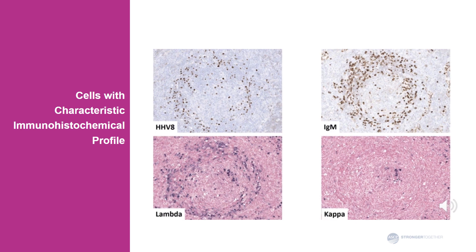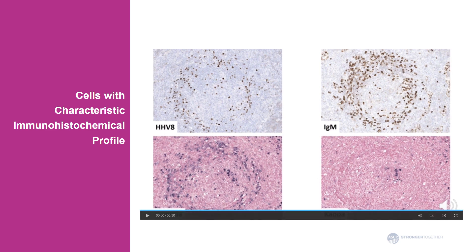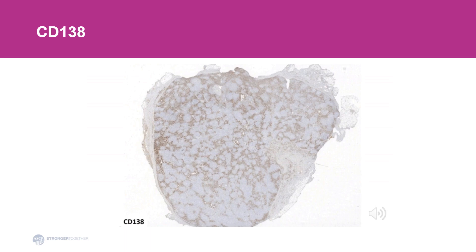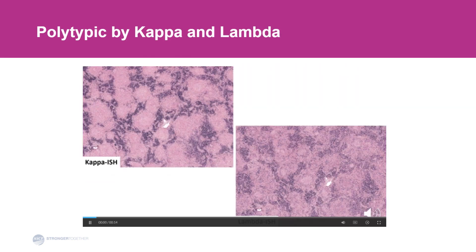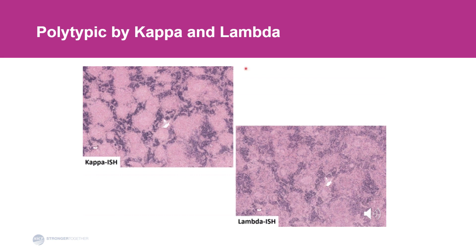These cells have a characteristic immunohistochemical profile. In addition to being positive for HHV8, they are also positive for IgM heavy chain and are lambda light chain restricted on in situ hybridization or immunohistochemical stain for kappa and lambda. So they are HHV8 positive, IgM positive, lambda positive, and kappa negative. When we do CD138, we can demonstrate the interfollicular sheets of plasma cells, which are polytypic by kappa and lambda. So the interfollicular plasma cells are polytypic, while the plasmablasts that are HHV8 positive are lambda light chain restricted.